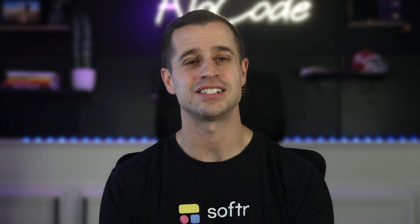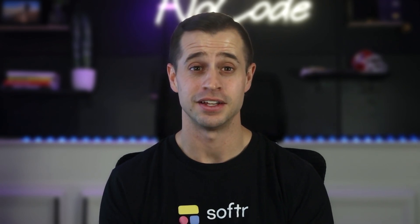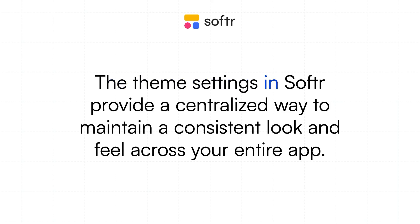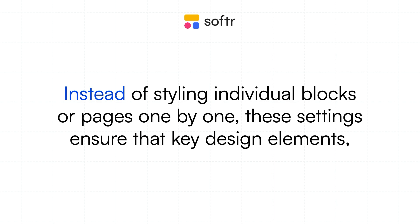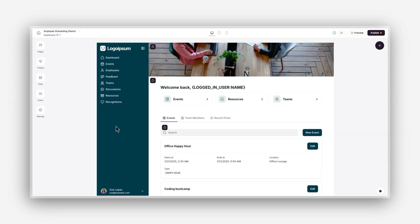Let's start by fine-tuning your app's design. A well-designed app isn't just about function — it should be visually appealing and easy to navigate. One of the key components of building a great app is styling it to reflect your brand and meet your user expectations. Software provides a comprehensive suite of styling features that cater to both beginners and advanced users. The theme settings provide a centralized way to maintain a consistent look and feel across your entire app, ensuring that key design elements such as fonts, colors, spacing, and accent colors are applied universally.